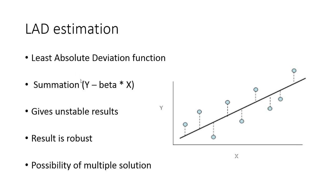There will be a summation here: the summation of the modulus of y minus beta multiplied to x. The term y minus beta multiplied to x is the difference between your data point and the regression line. We take the modulus of that, so it is going to be positive all the time, and then we take the summation across and do the optimization to find out what beta really minimizes the absolute deviation.